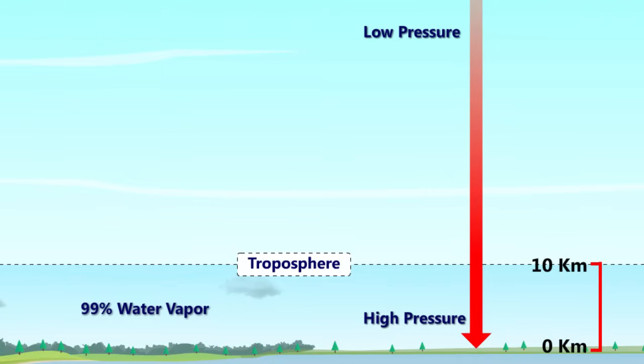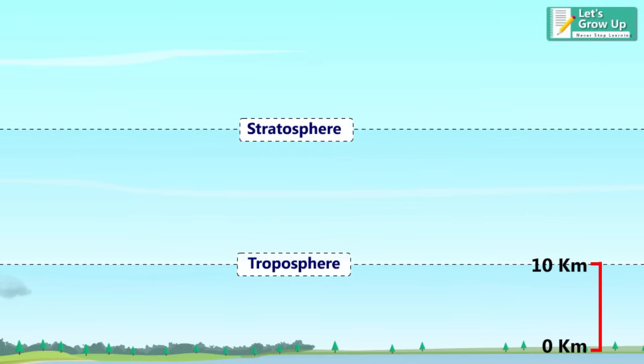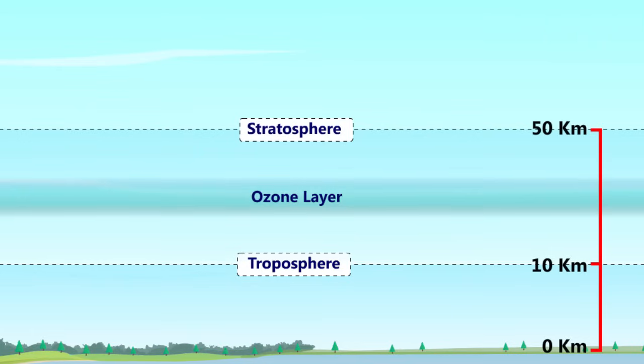The next layer up is called the stratosphere. The stratosphere extends from the top of the troposphere to about 50 kilometers, 31 miles, above the ground. The infamous ozone layer is found within the stratosphere. Ozone molecules in this layer absorb high-energy ultraviolet UV light from the Sun, converting the UV energy into heat.